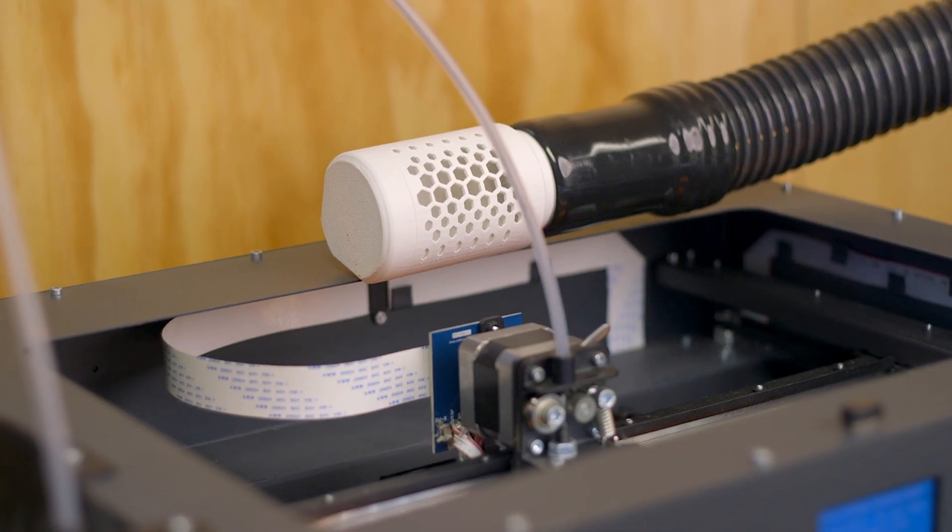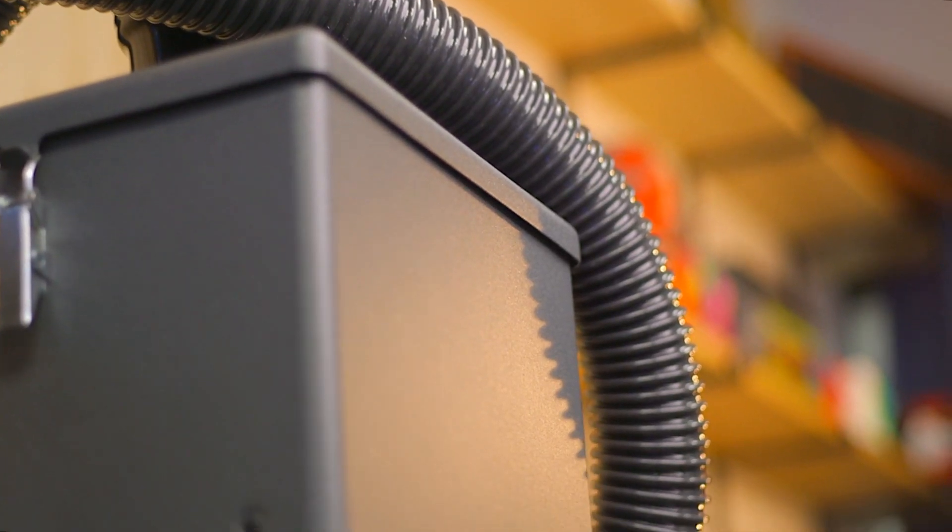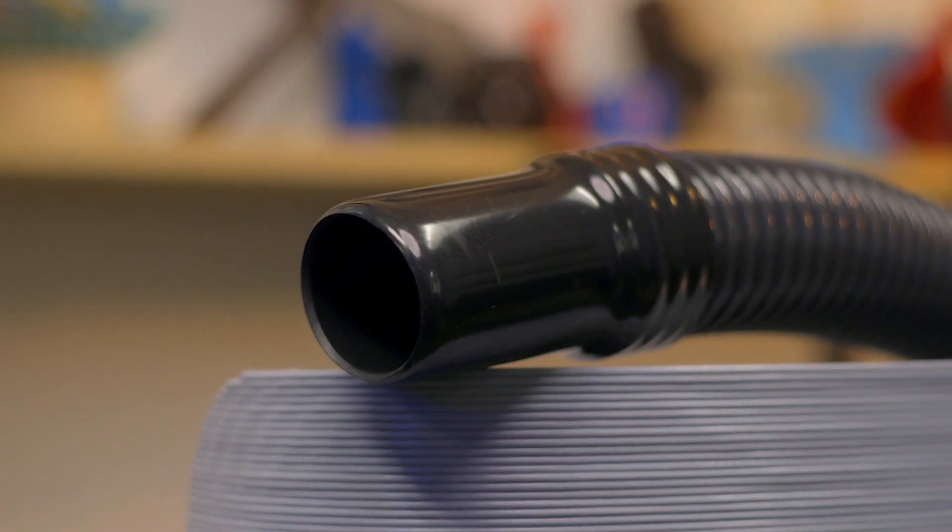Install the intake plenum above the 3D printer's build volume to pull in the contaminated air and vent the exhaust back into your office with the assurance that you're breathing clean, refreshed air.